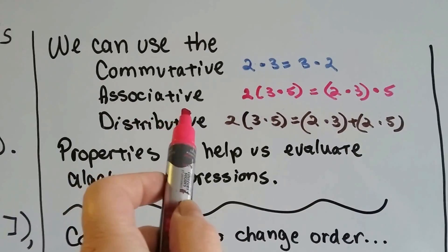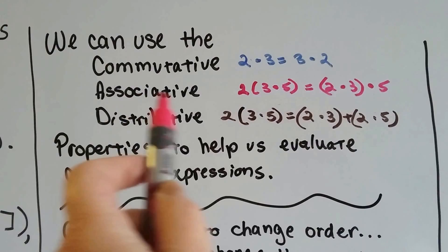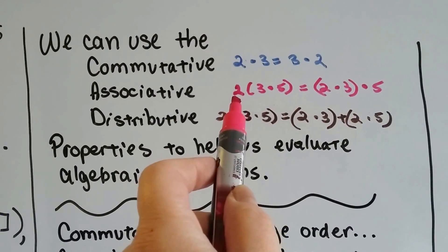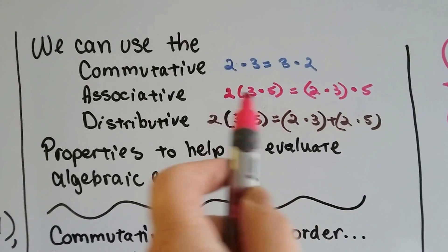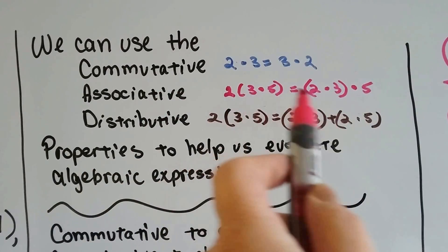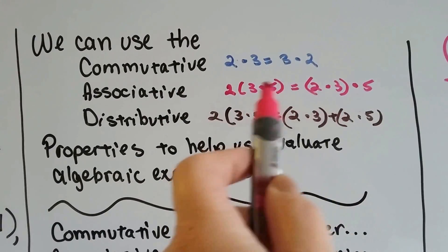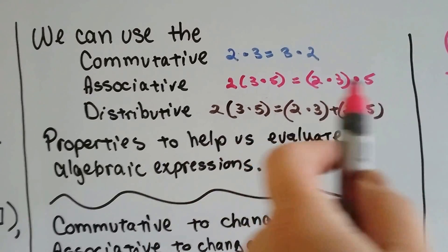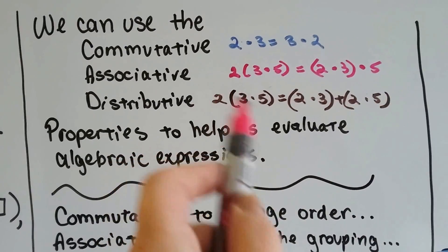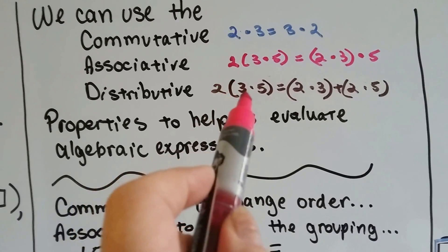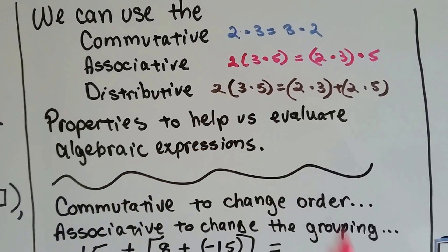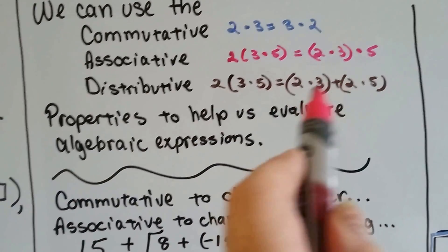Associative is who you're hanging out with. Who's your associates? Is the 2 by itself while the 3 and 5 hang out? Or is the 5 by itself while the 2 and 3 hang out? So associative is a grouping property. It doesn't matter because it's all multiplication. They're all going to get multiplied together. Distributive says that you can distribute this 2 to the 3 and to the 5 and add them together.